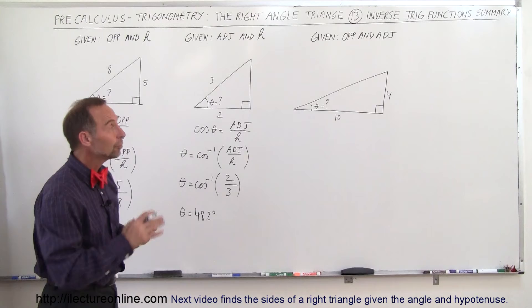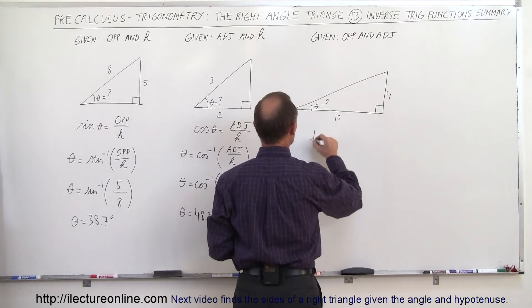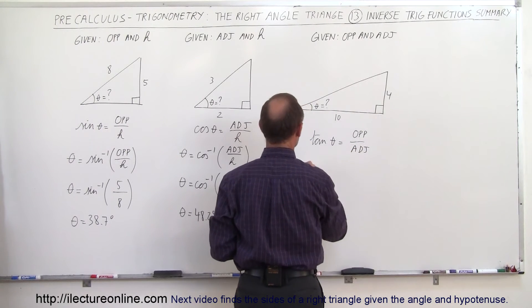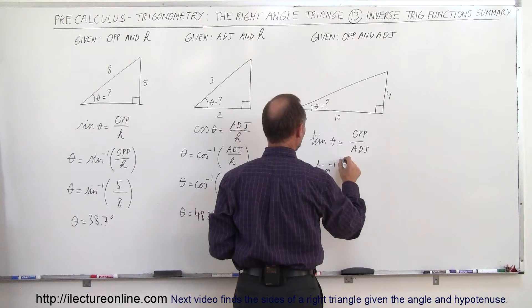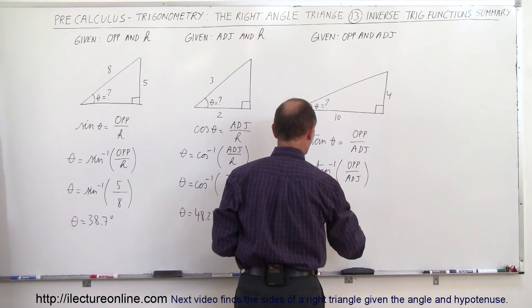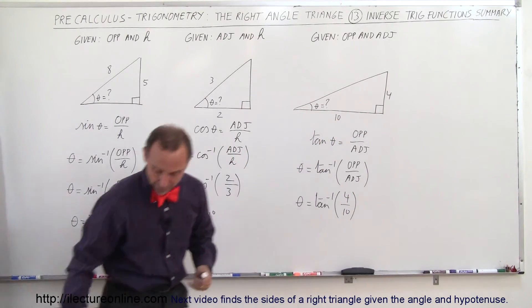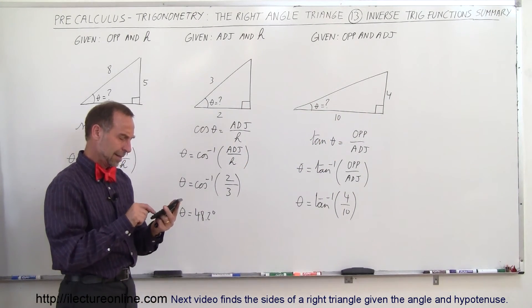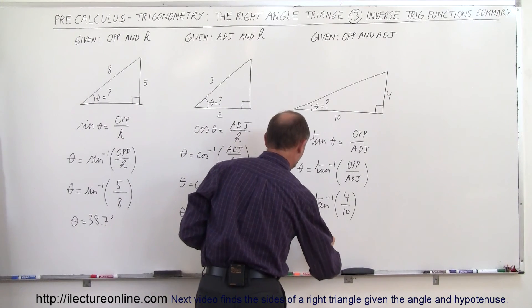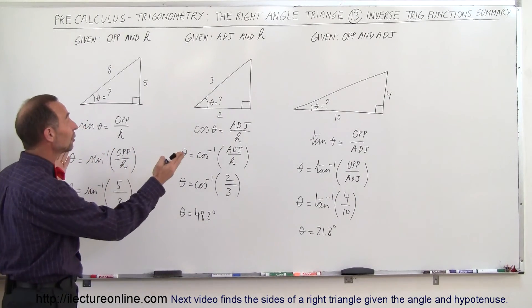Finally, if you're given both the opposite and the adjacent side but not the hypotenuse, you use the tangent. The tangent of theta by definition is equal to the ratio of the opposite side divided by the adjacent side, which means theta can be found by taking the arc tangent of the opposite over adjacent. In this case that's the arc tangent of 4 divided by 10, which gives 21.8 degrees.